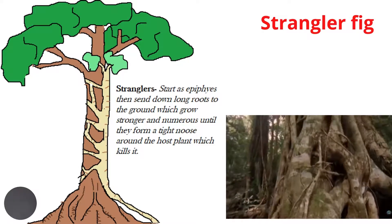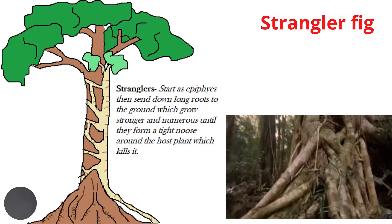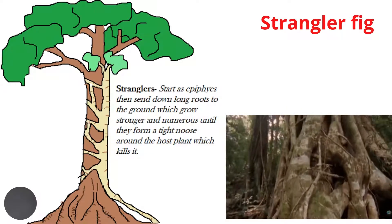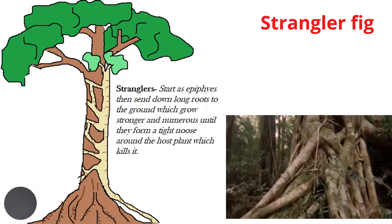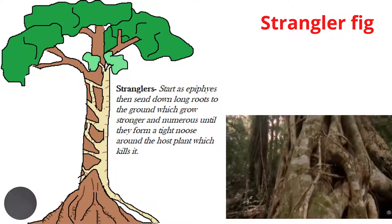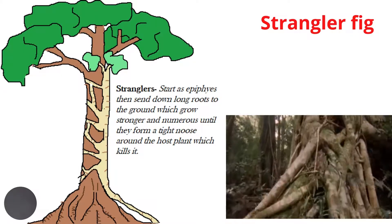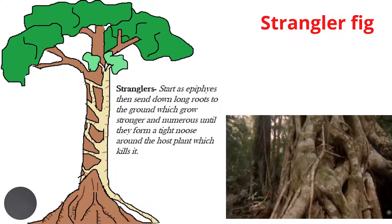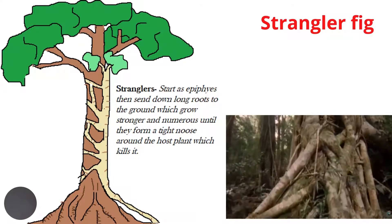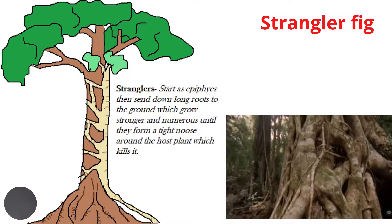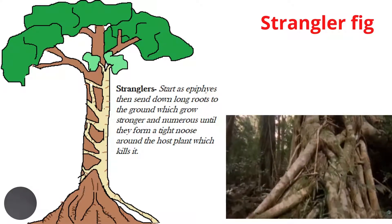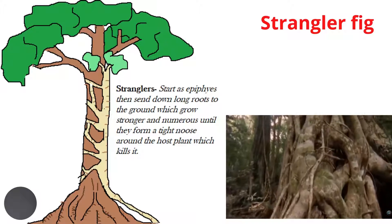Stranglers begin their lives as epiphytes, then send down long roots that reach to the ground level. These roots grow stronger and more numerous with time, until they become a tight noose around the host trees and eventually strangle them.